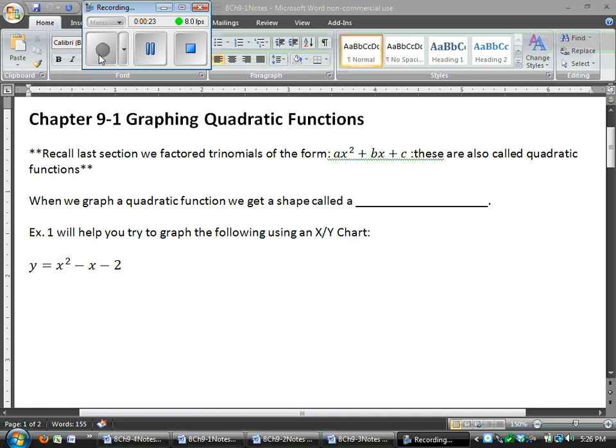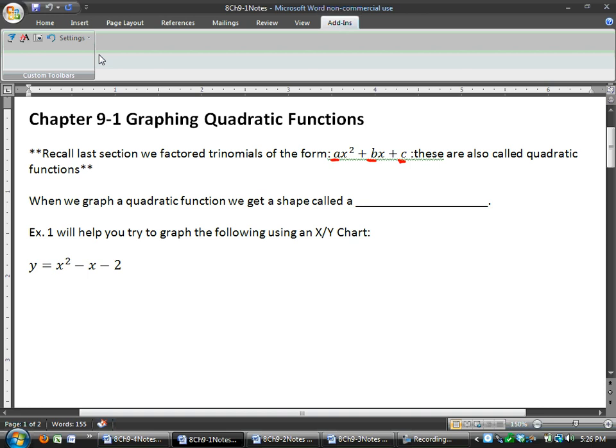So we're going to learn first how to graph quadratic functions. Remember, last chapter we started talking about quadratic equations when we were factoring. We called them trinomials. And they were in the form ax squared plus bx plus c. So remember, any time we talk about a, b, or c, that's what we're talking about. a is always in front of my x squared term, b is in front of my x, and c is added or subtracted on at the end.